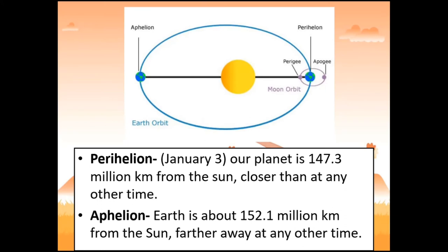Let us review two terms. Perihelion is when our planet is 147.3 million kilometers from the sun — closer than at any other time. Aphelion is when earth is about 152.1 million kilometers from the sun — farther away than at any other time. Because we have an elliptical orbit, we don't have a perfect circular orbit.